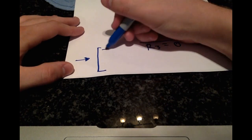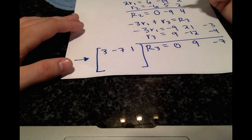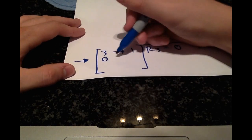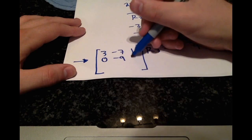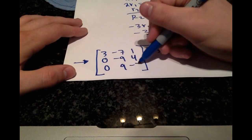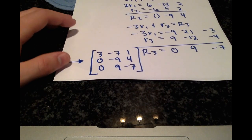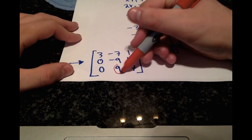The first row did not change. We have 3, negative 7, 1. And then the other two rows are 0, negative 9, 4, and 0, 9, negative 7. So you should be able to see, we need this term to now be 0.